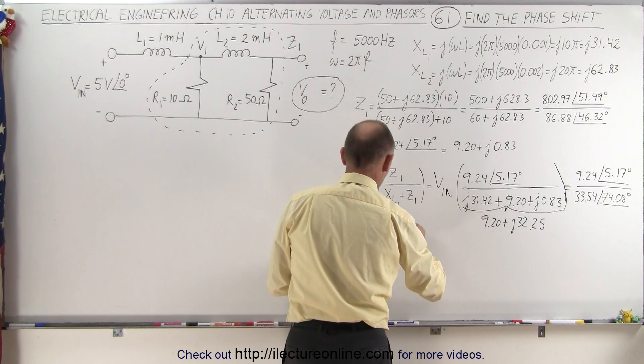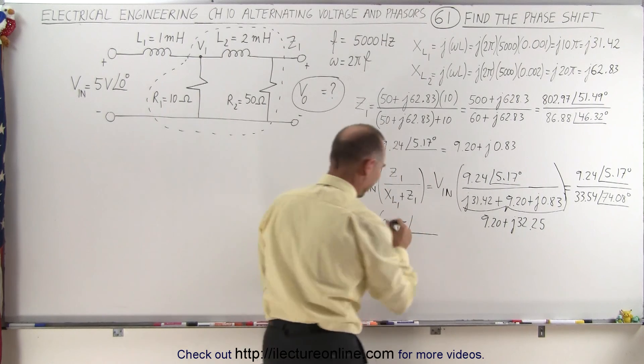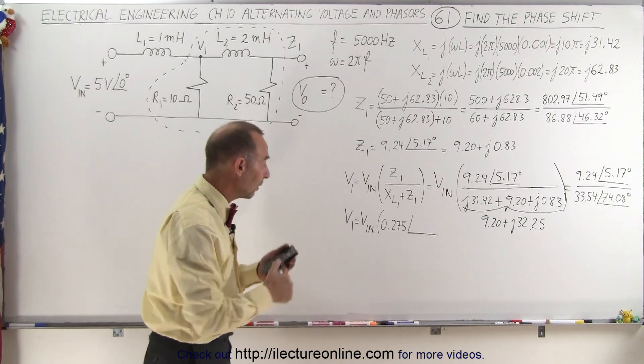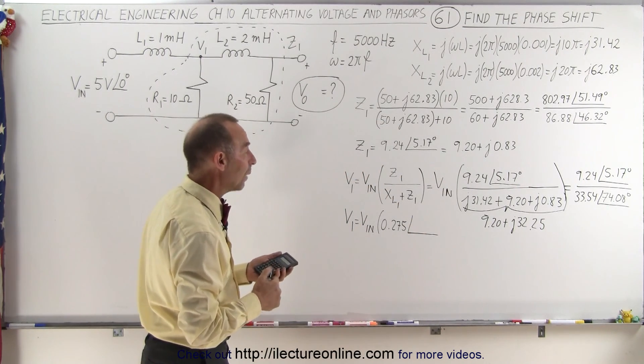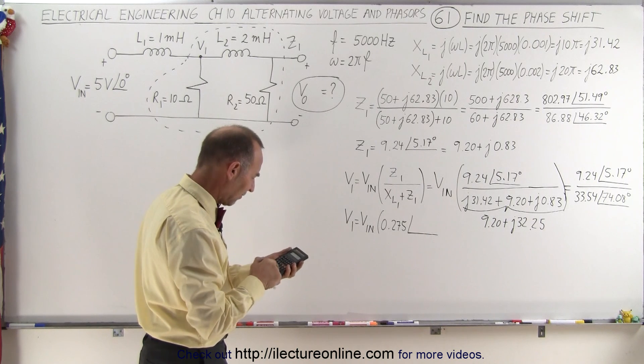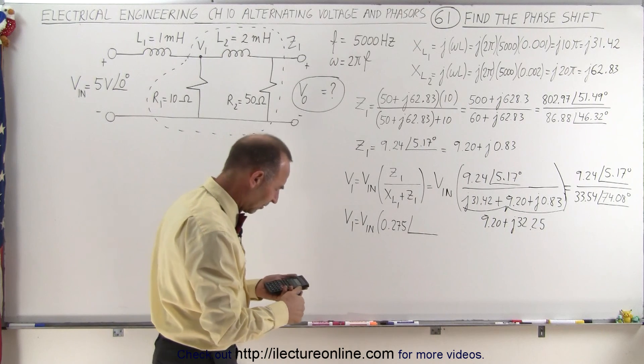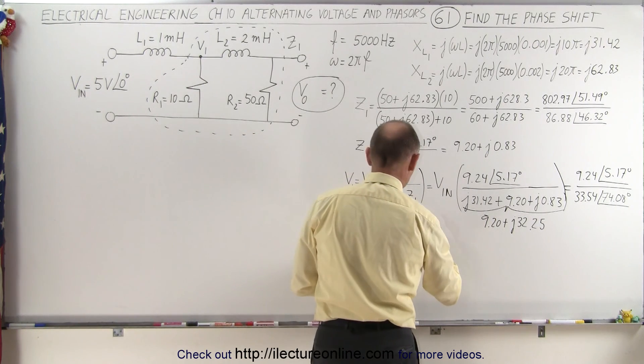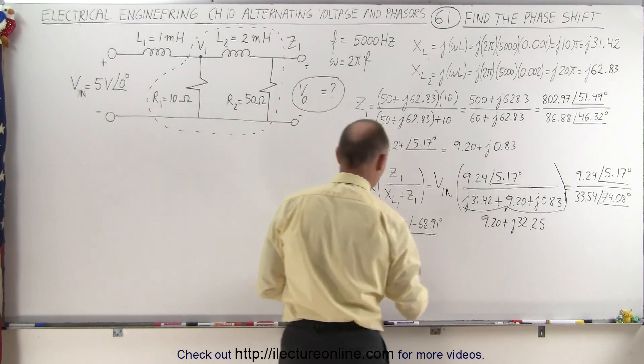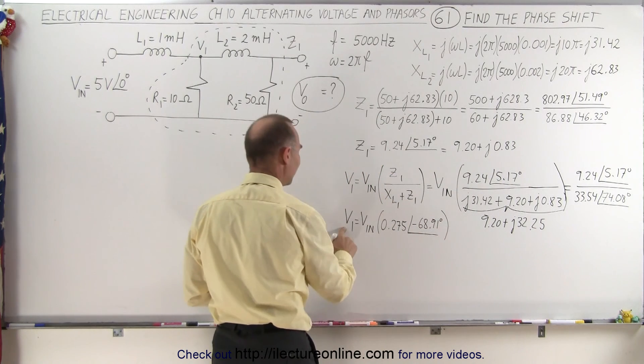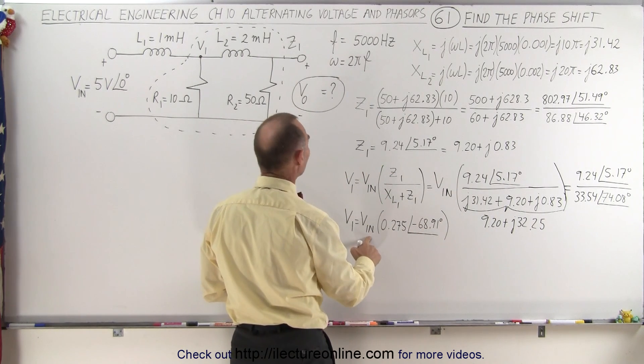0.275 with a phase angle, I kept an extra decimal place to reduce rounding errors, 5.17 minus 74.08, that gives us minus 68.91 degrees. So now we have V1 in terms of the input voltage.